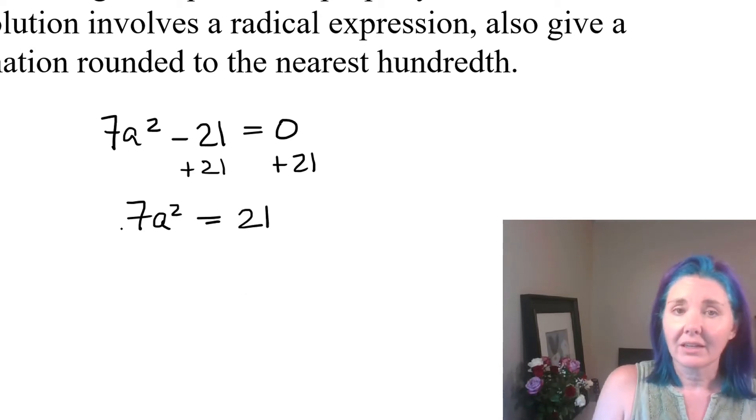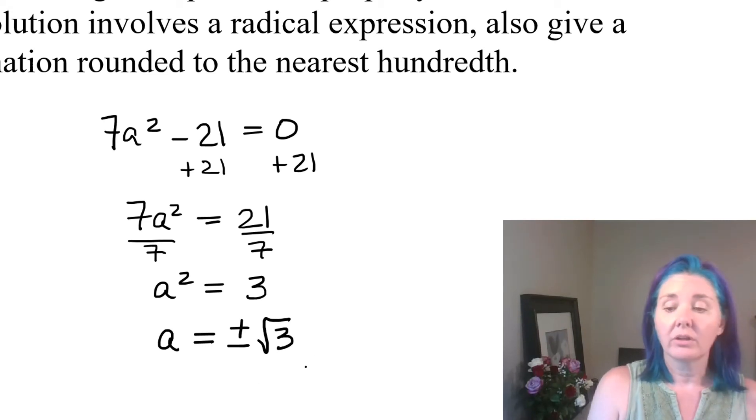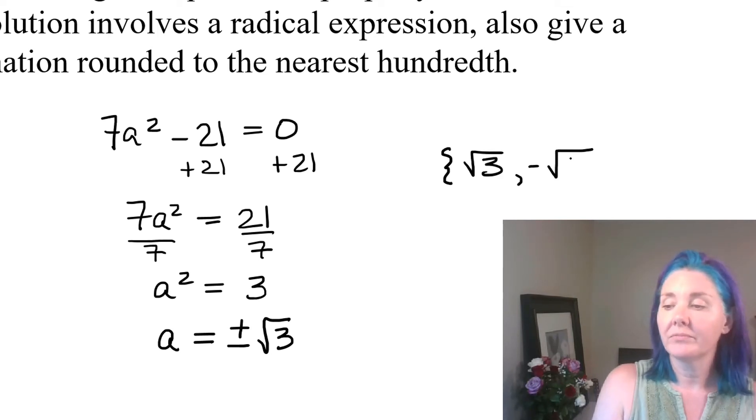Then I'm going to divide by that coefficient 7 in order to get the a squared completely by itself. Dividing both sides by 7 gives us a squared equals 3. Now I'm going to apply the square root property. If a squared is equal to 3, a is equal to plus or minus the square root of 3. So there are actually two solutions, either the positive square root of 3 or the negative of the square root of 3.